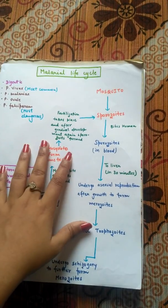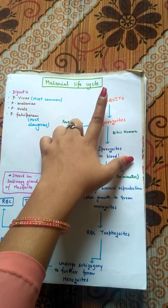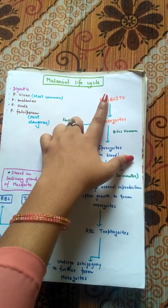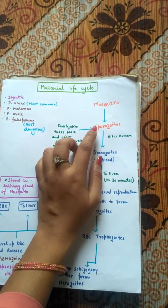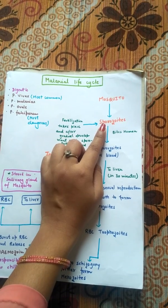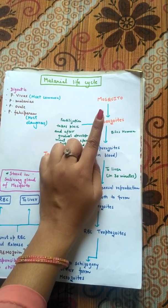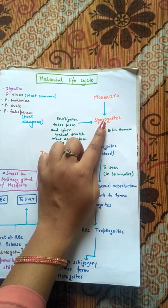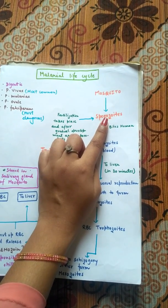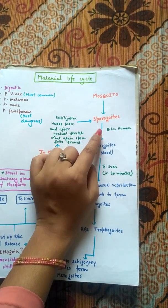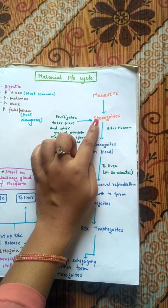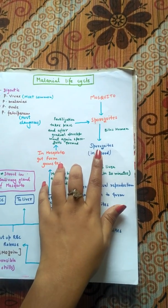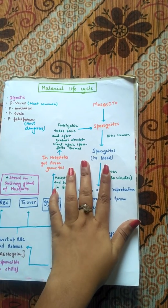In the salivary gland of the female Anopheles mosquito, there is a stage of the malarial parasite Plasmodium vivax known as sporozoites. These sporozoites are already present in the salivary gland of the female Anopheles. When the female Anopheles bites a human, she transfers these sporozoites inside the blood of the human.